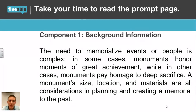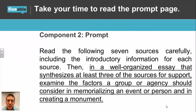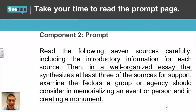Component two is the actual prompt. Here's what it says: 'Read the following seven sources carefully, including the introductory information for each source. Then, in a well-organized essay that synthesizes at least three of the sources for support, examine the factors a group or agency should consider in memorializing an event or person and in creating a monument.' I always encourage students to underline the prompt so you can quickly reread it as you're writing to make sure you're fully answering the question.